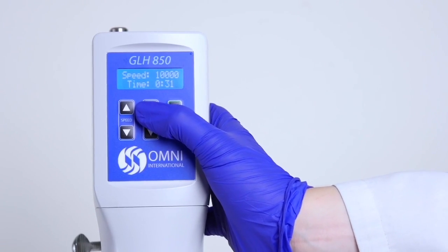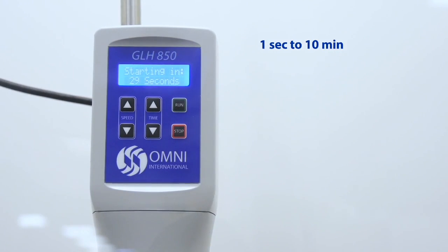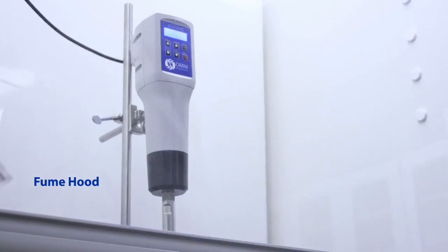The Omni GLH 850 features a timer that can be set from 1 second to 10 minutes and also features a delayed motor start time for applications requiring a fume hood during homogenization.